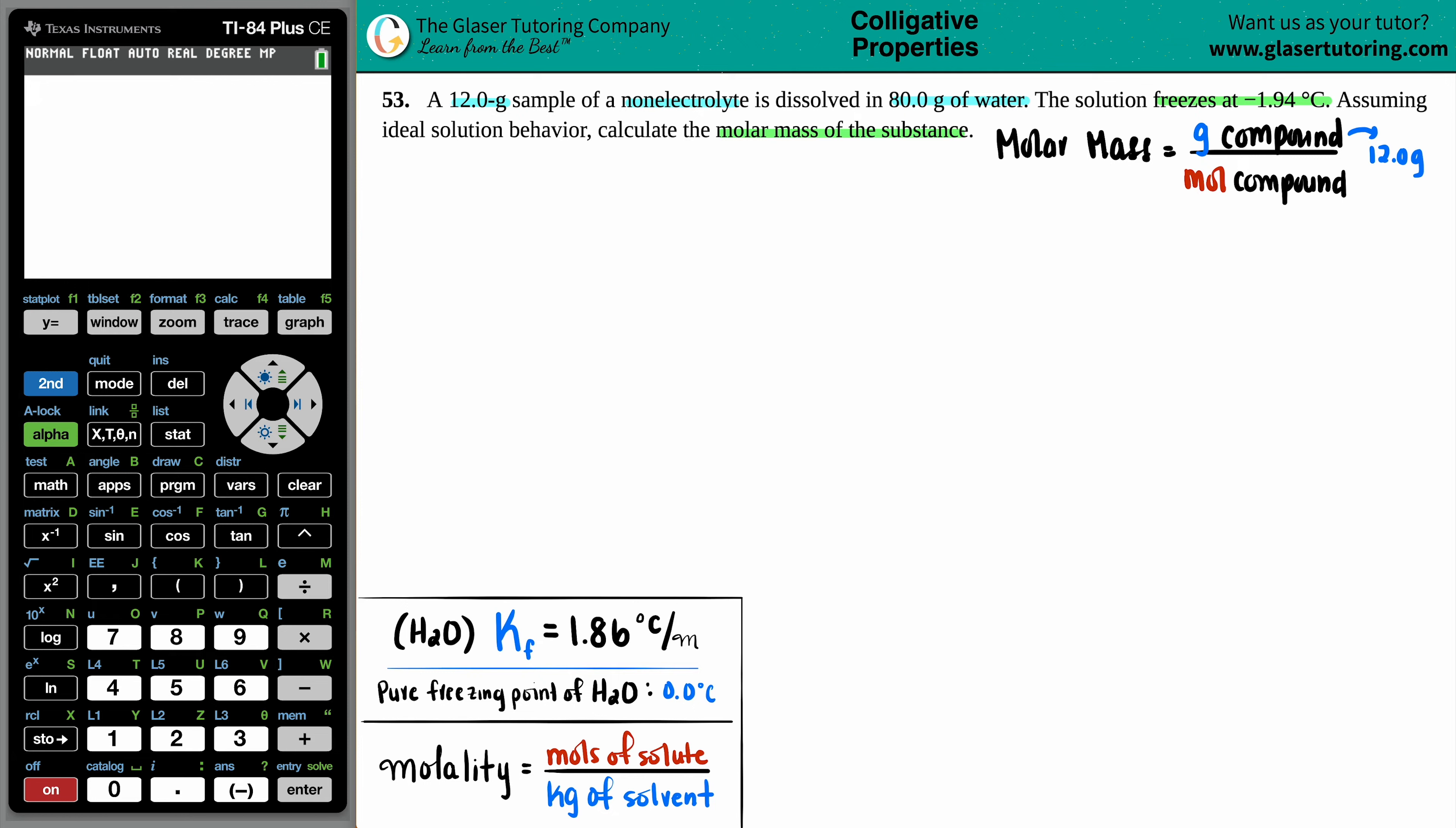Now, we're dealing with a type of solution here because we're dunking one substance into a liquid substance. In this case, we're dunking this non-electrolyte into water. So from there, we make a total solution and a solution is always made up of a solute and a solvent.